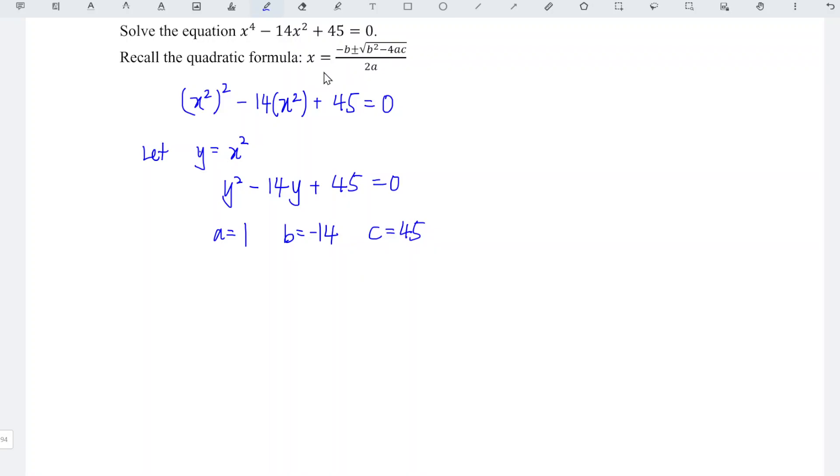We substitute into the formula: y equals negative b, which becomes plus 14, plus or minus the square root of b squared.